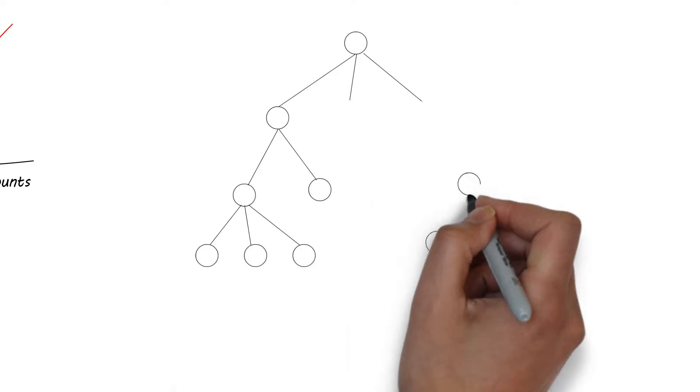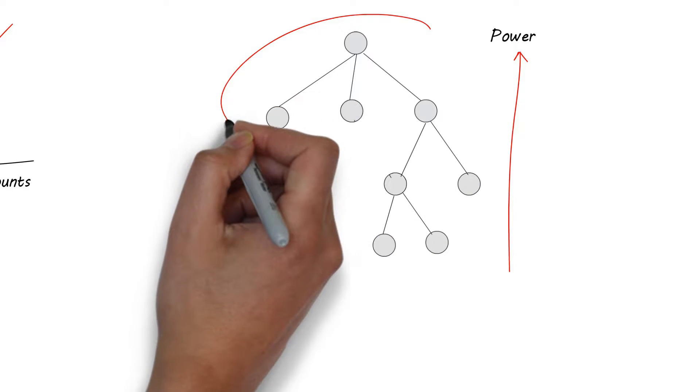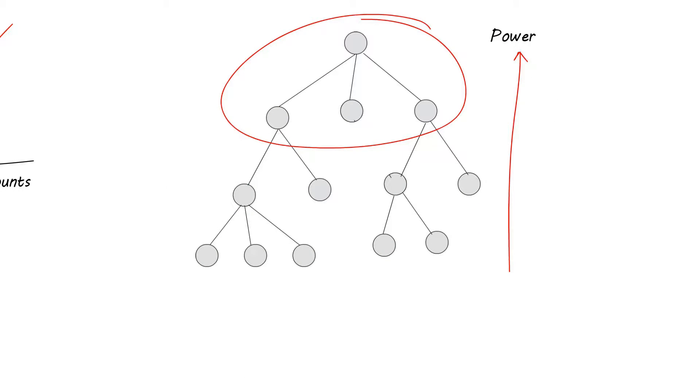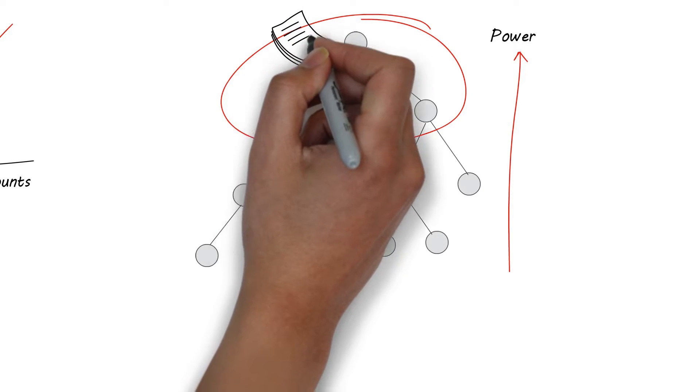You would think that the power in any organization lies with the top executives and you would not be faulted for doing so. They make the major decisions and guide the direction of the organization. However, that information they use to make the decision, is that correct?